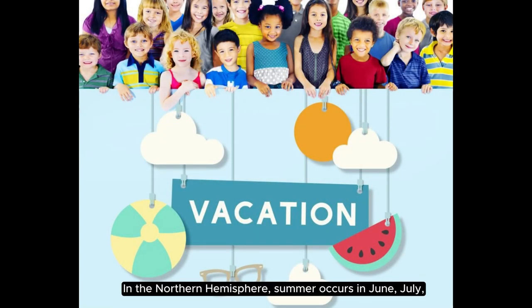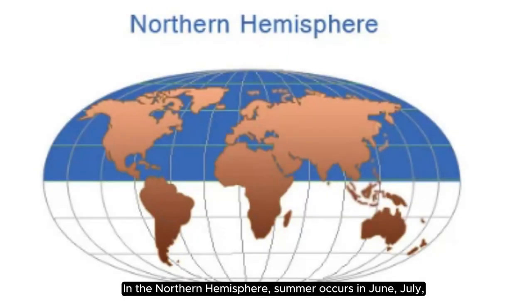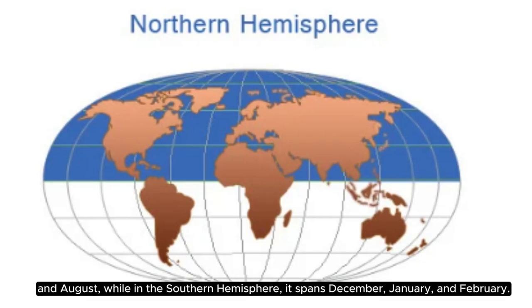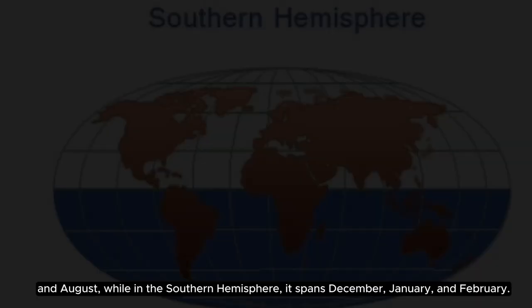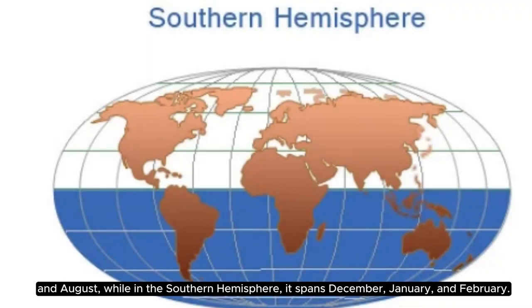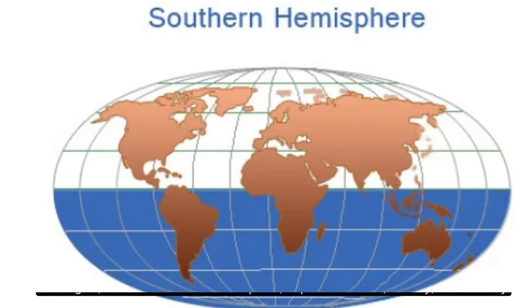In the Northern Hemisphere, summer occurs in June, July, and August, while in the Southern Hemisphere it spans December, January, and February.